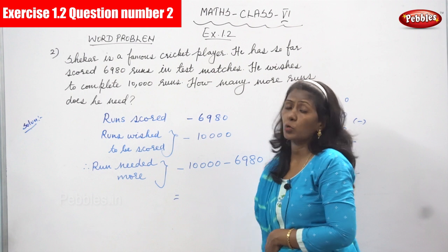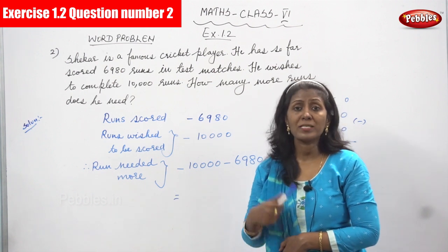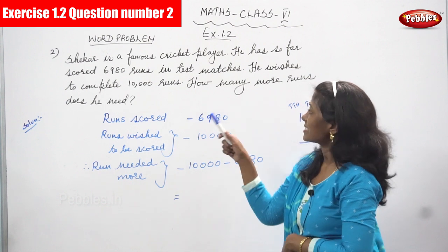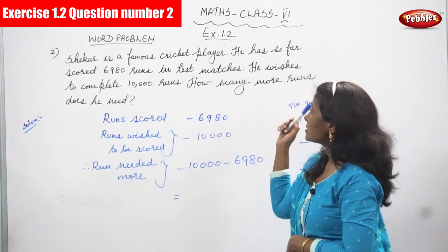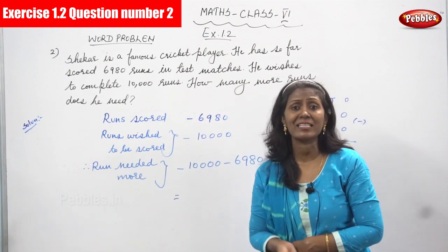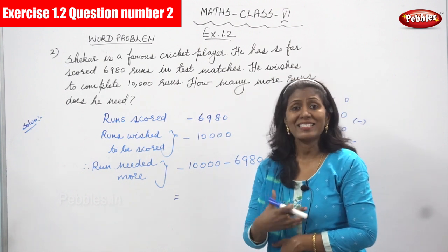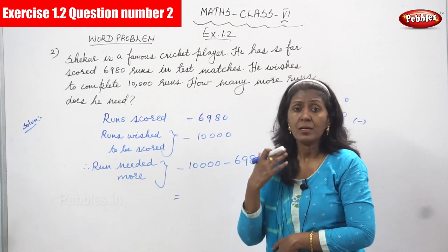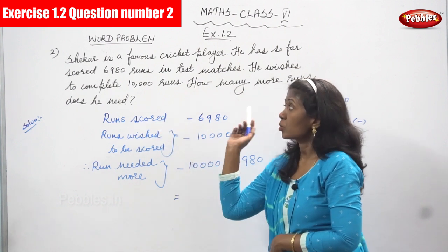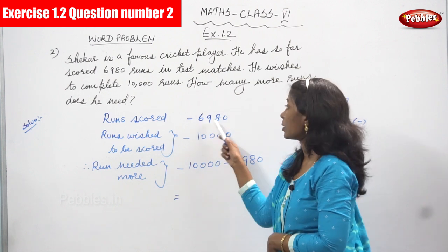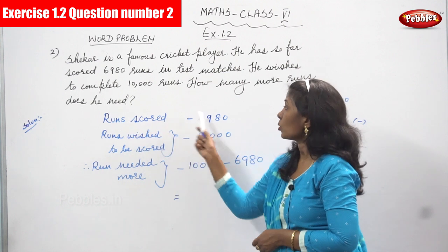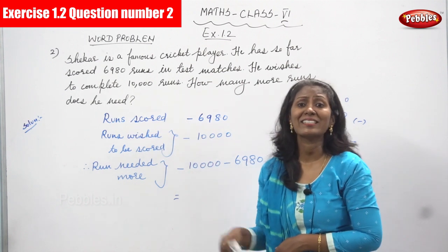He wished to score 10,000 runs. So how many more runs does he need? Runs needed more — that is the question. Run scored by Shaker is 6,980 runs.